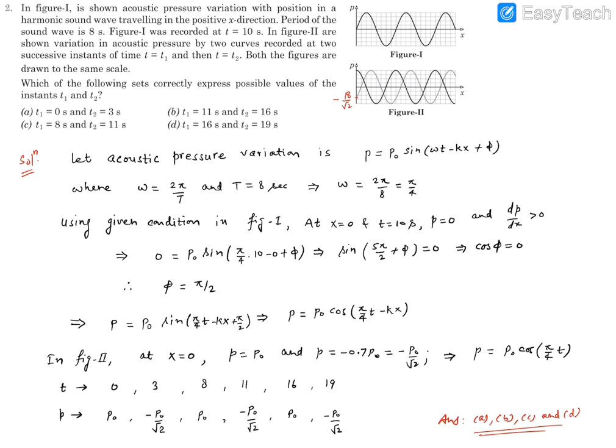Similarly if we consider 8 and 11 seconds: at 8 seconds the p value is p naught, at 11 it's minus p naught by root 2. That means this pair also explains those times for which this figure can be drawn. Similarly we can check 11 and 16. At t equals 11 seconds it's minus p naught by root 2, and at t equals 16 seconds it's p naught. So this pair can also be explained by this figure.